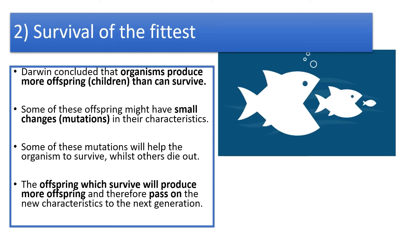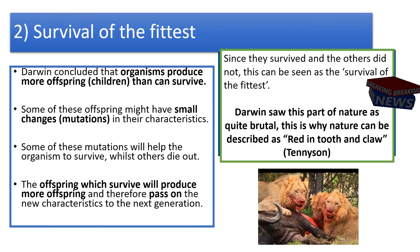Furthermore, regarding survival of the fittest: Darwin suggested that organisms produce more offspring than can survive. All of these offspring have tiny or small mutations — they're not all the same — but the ones with beneficial changes that help them to survive are more likely to live and reproduce, whereas the others die out. The idea is that the fittest and most able to survive will persist. This is why Tennyson wrote a poem describing nature as being 'red in tooth and claw' — it's quite brutal, really. Everything is in competition.